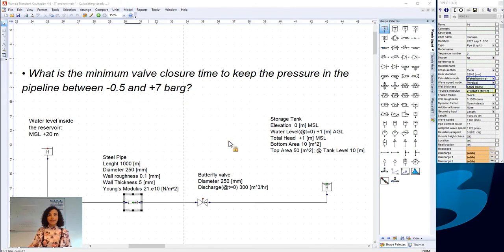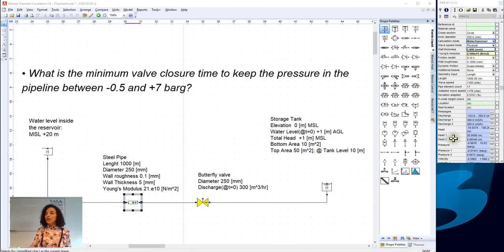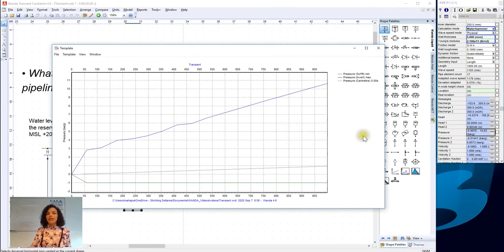Now, Wanda is calculating steady-state results, and then it calculates transient. As we are interested in looking at the pressure in the pipeline system, we select the pipe component, and we look at the pressure values in the pipeline system. And as we can see, the pressure is exceeding our allowable pressure criteria. It is going above 7 bar gauge and reaching minus 1 bar gauge.